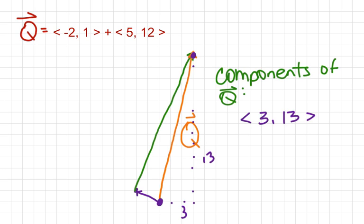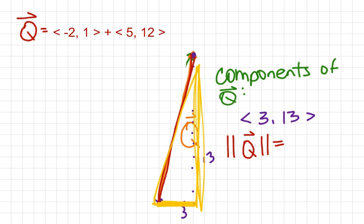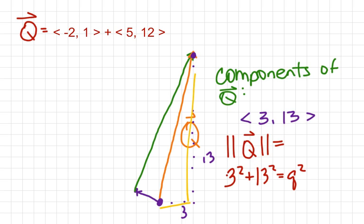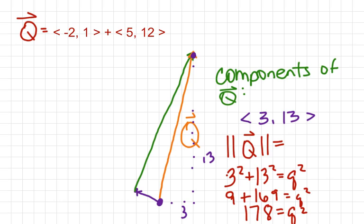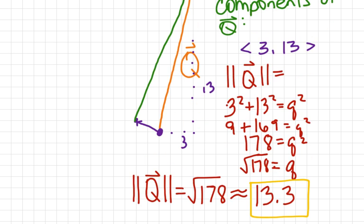Now if I want to find the magnitude — the length of this vector in units — this is where we use the Pythagorean theorem. So 3 squared plus 13 squared equals q squared, which is 9 plus 169, giving us 178 equals q squared. Taking the square root of both sides, q equals the square root of 178. The magnitude of vector q equals the square root of 178, which is approximately 13.3. Notice the squiggly equal sign — that means approximately equal to because we had to round.